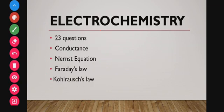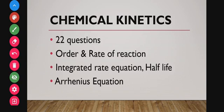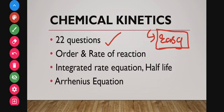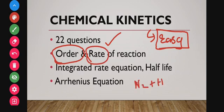The next topic is chemical kinetics, from which 22 questions were asked. It is a very easy chapter. In chemical kinetics, you have to know how to calculate the order of a reaction — first order, second order, or third order — and the rate of the reaction.